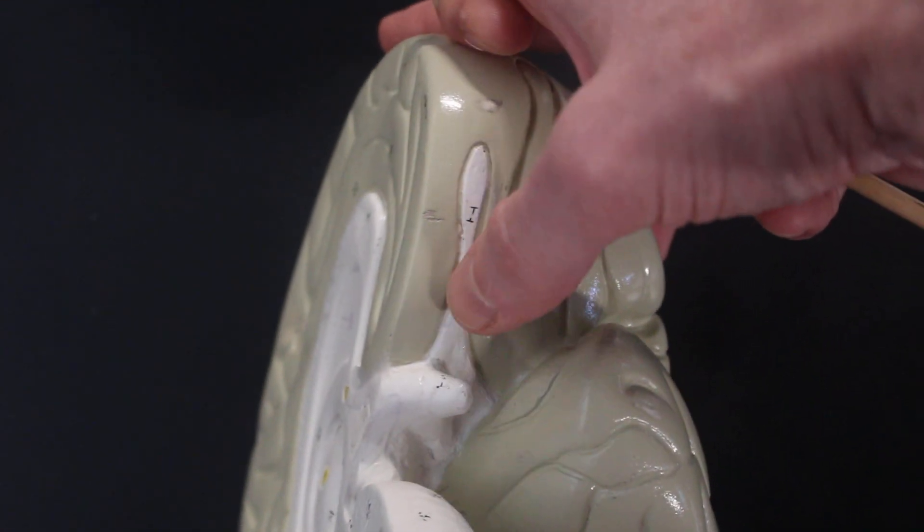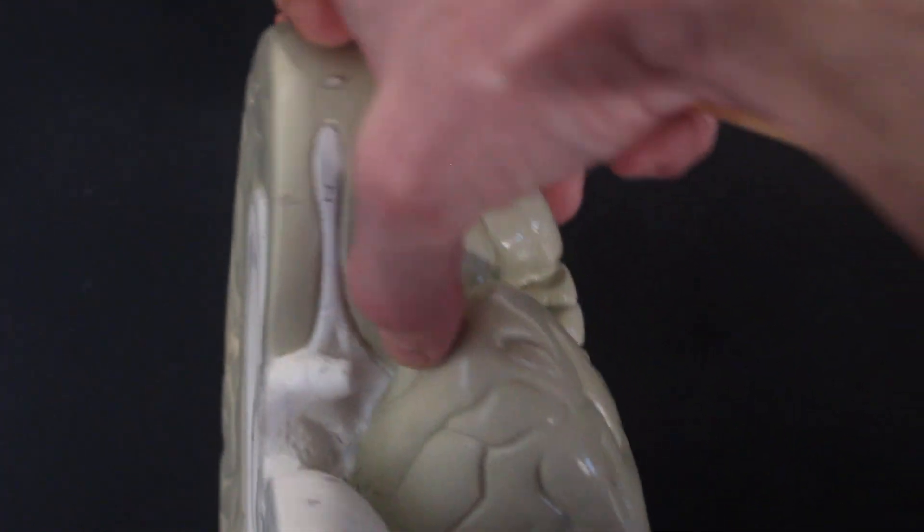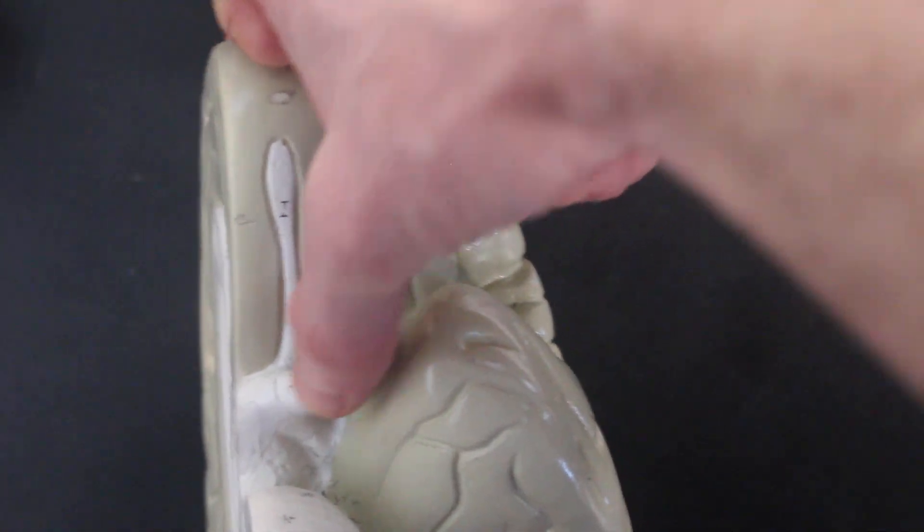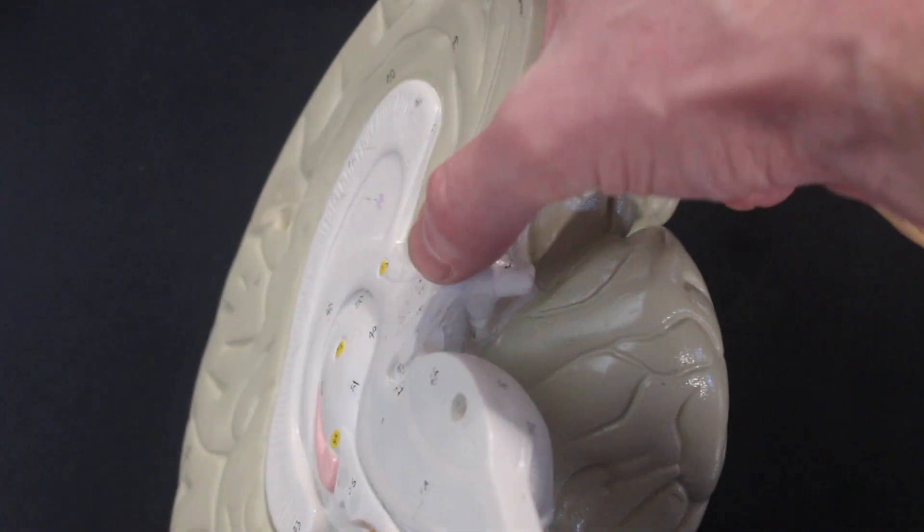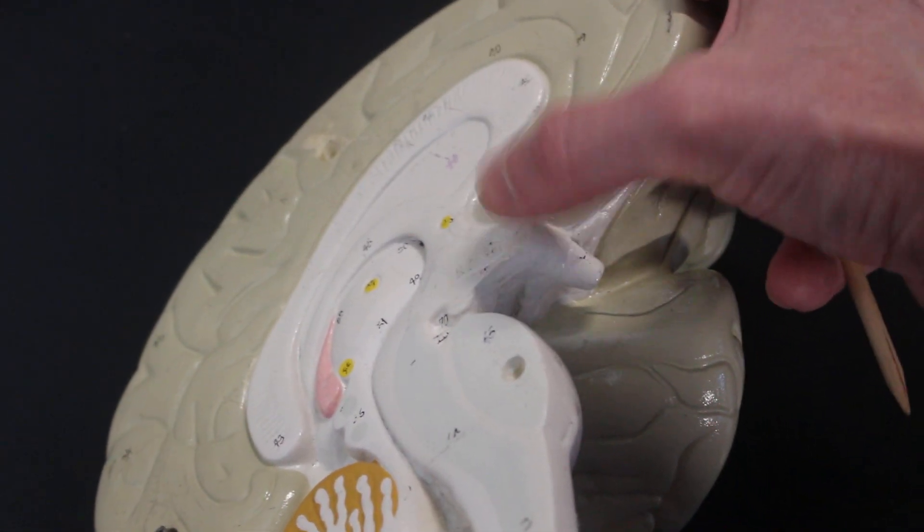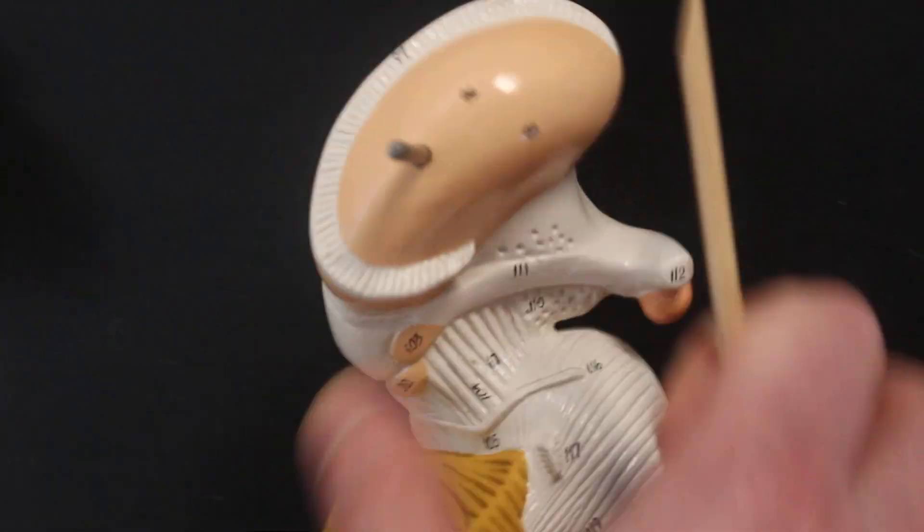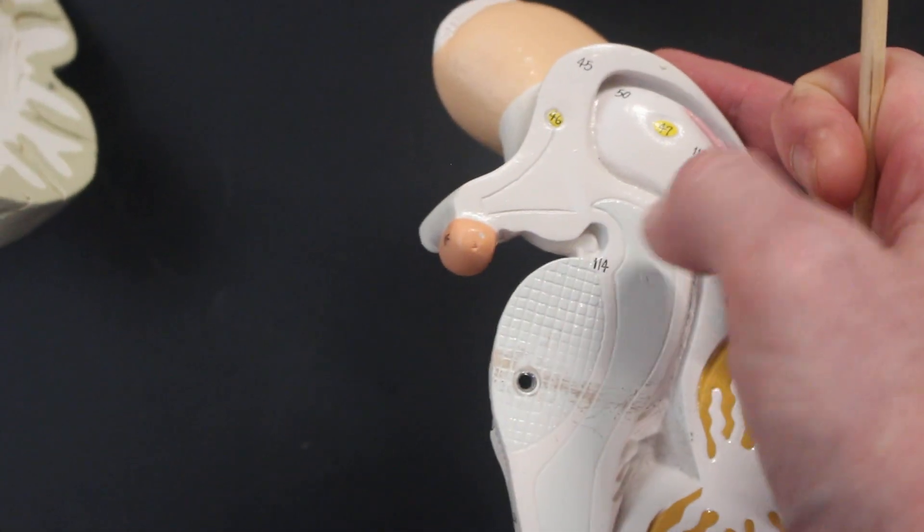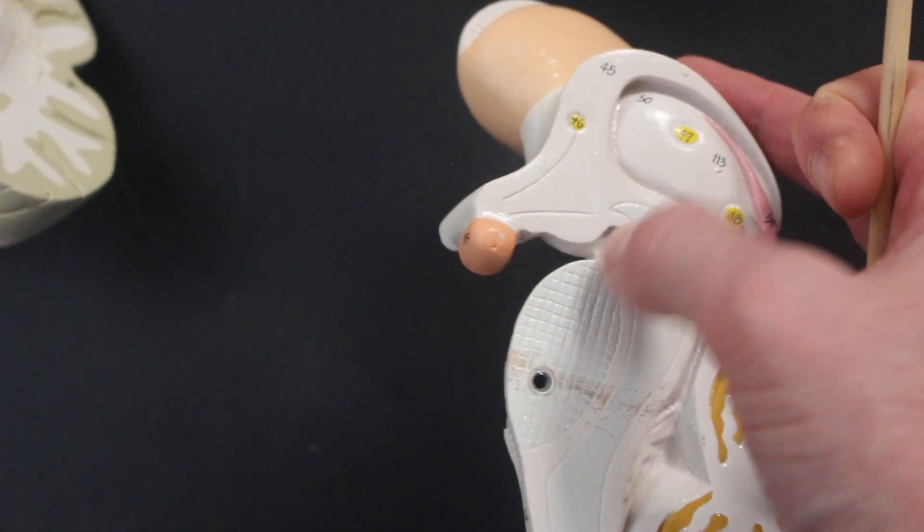Then we have the nerves. So here is the olfactory bulb. That's the olfactory tract. This stump here is the optic nerve. The optic nerve then goes to the optic chiasm, which is right next to the hypothalamus. And if we look on this side, coming out from right under the mammillary body, right there is the oculomotor nerve.